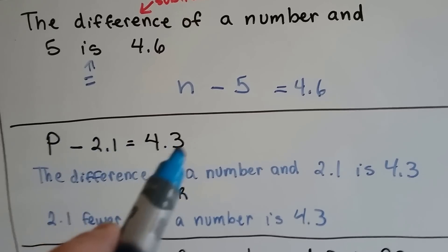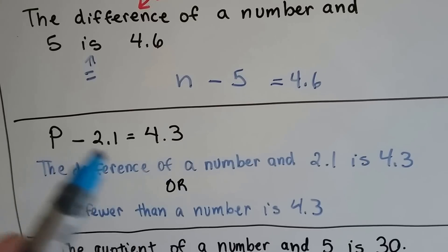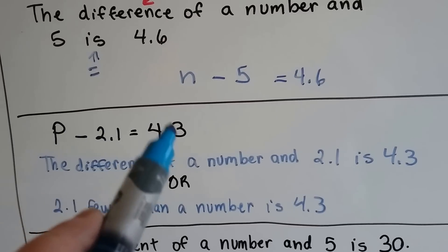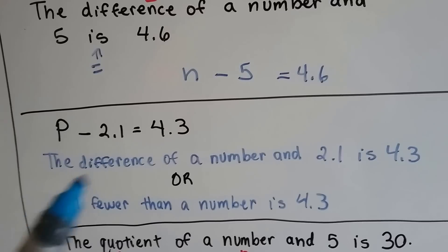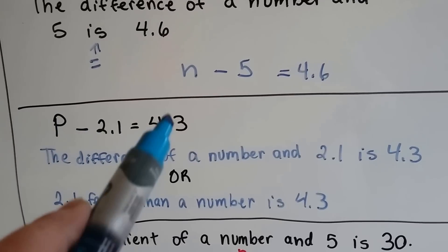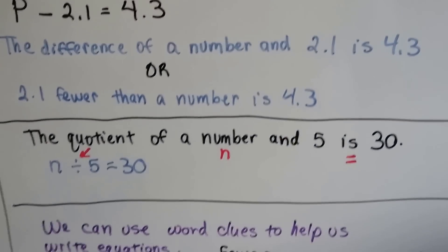P minus 2.1 equals 4.3 and they want us to write a sentence for it. So, we could write the difference of a number, P, and 2.1 is 4.3. We could have also written 2.1 fewer than a number is 4.3 and that would have been correct also. There's a lot of different ways to write these.